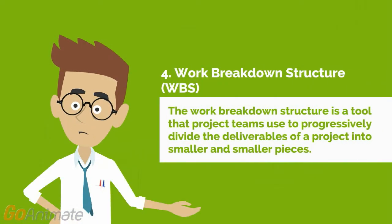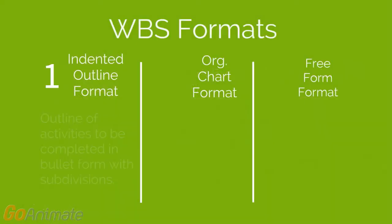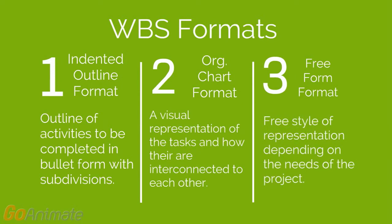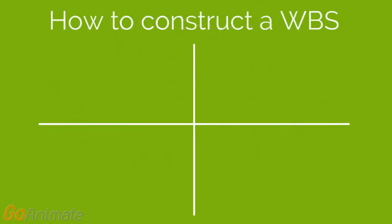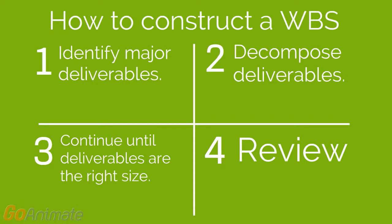Point number four: Work Breakdown Structure, or WBS. This is a tool that project teams use to progressively divide the deliverables of a project into smaller and smaller pieces. The first format is indented outline format, which is an outline of activities in bullet form with subdivisions. Second is organizational chart format, which is a visual representation of activities and how they are interconnected. Three is free form format — a freestyle graphical representation. To construct a WBS, you must first identify major deliverables, then decompose those deliverables, continue until deliverables are the right size, and finally review.